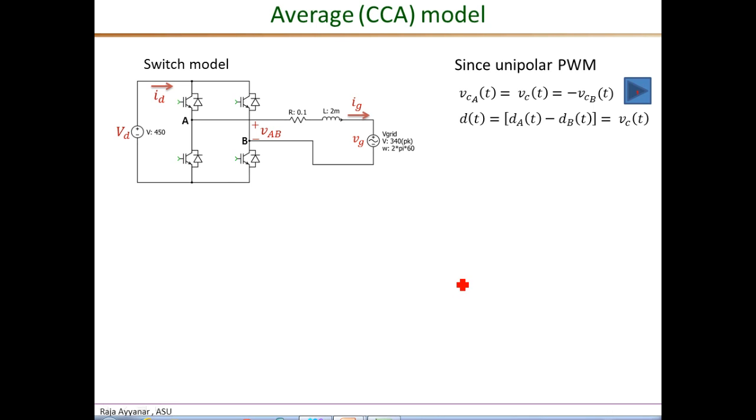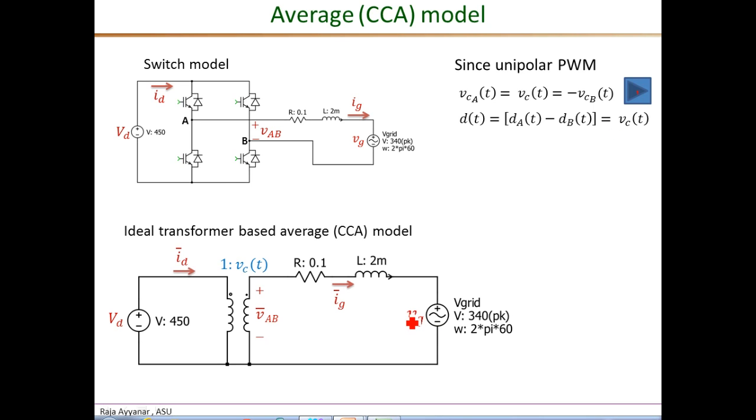In our analysis of a two-pole converter, we defined something called the effective duty ratio D. D is nothing but DA minus DB, where DA is the duty ratio of pole A and DB is the duty ratio of pole B. We also showed that this effective duty ratio D is the same as the control voltage VC, and VC is constrained to be between 0 and 1 for a V triangle amplitude of 1 volt.